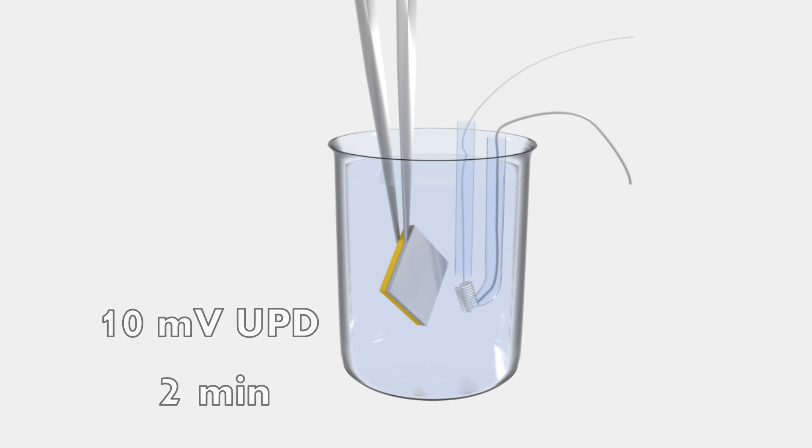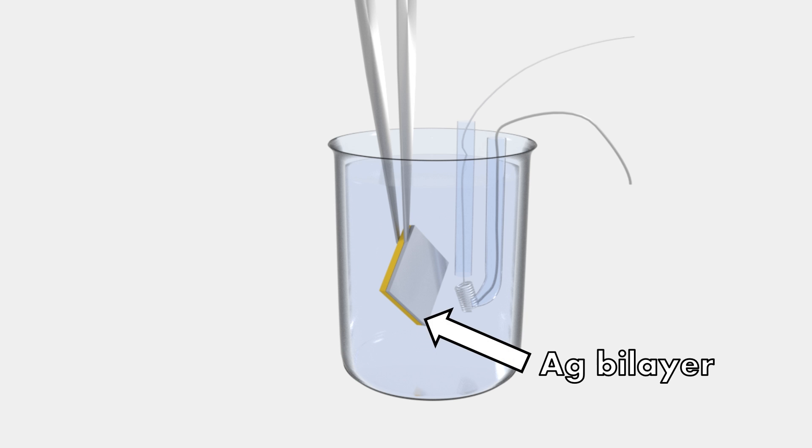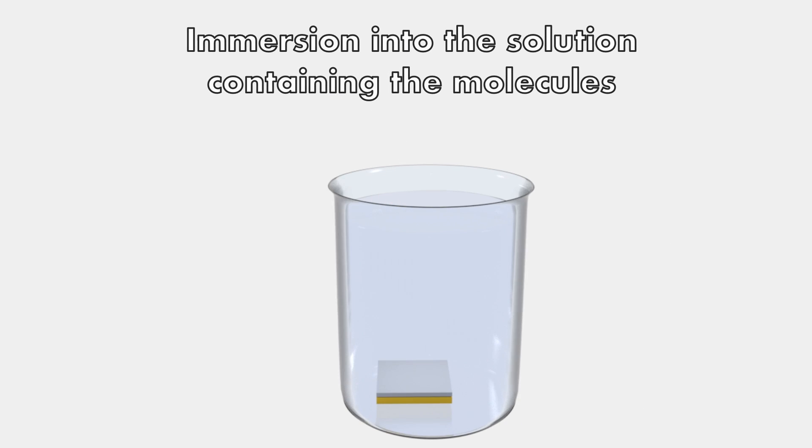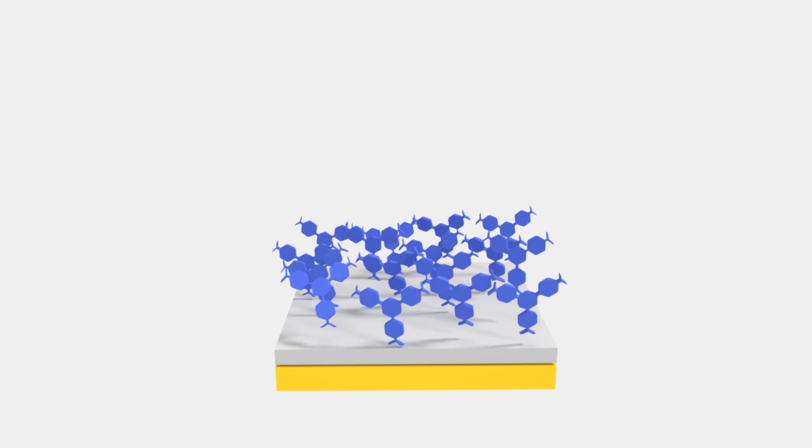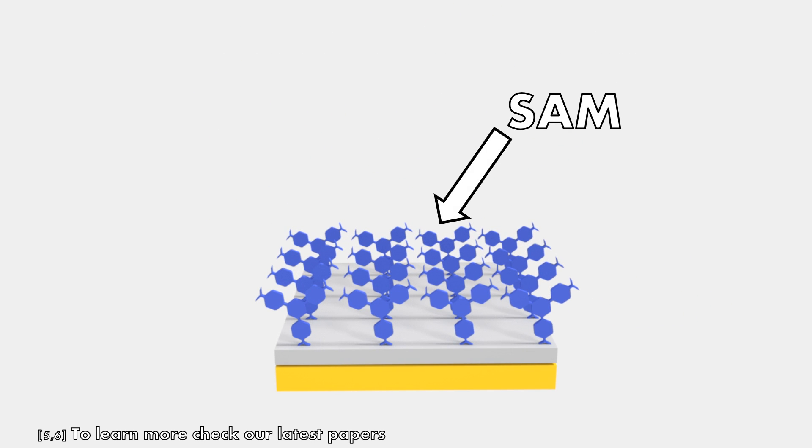This creates a two-atom thick layer of silver on top of the gold. Finally, the substrate is immersed into a solution containing our molecules, where, through the magic of enthalpy and entropy, the molecules self-assemble, forming a SAM.